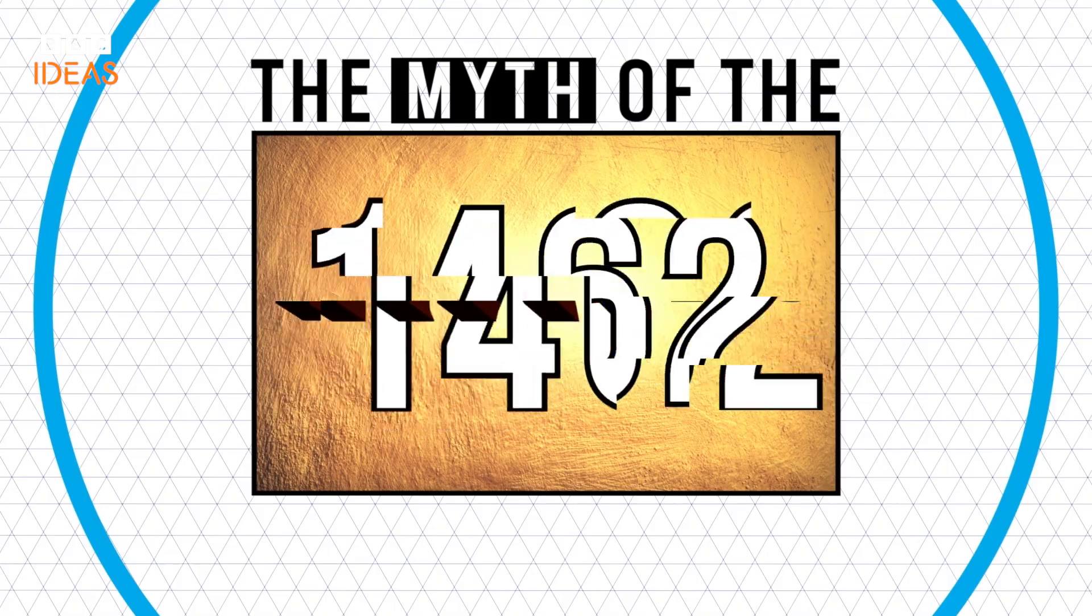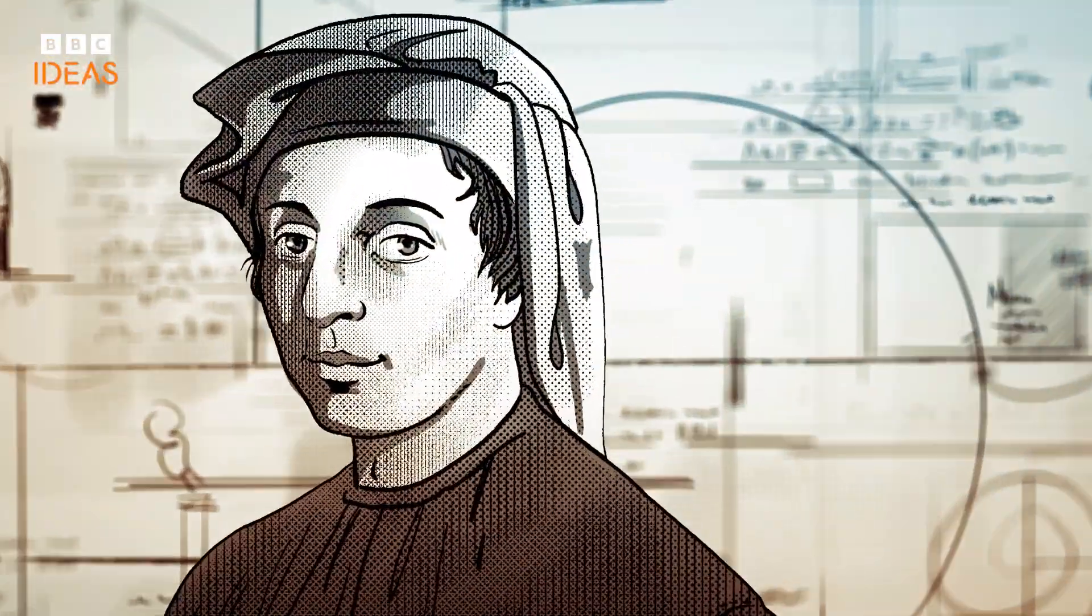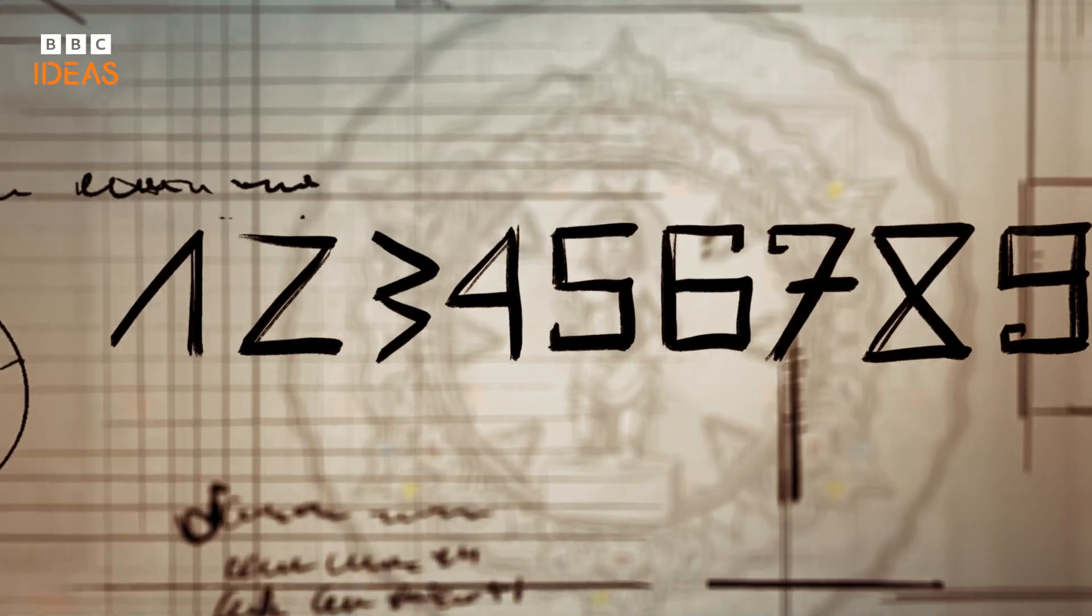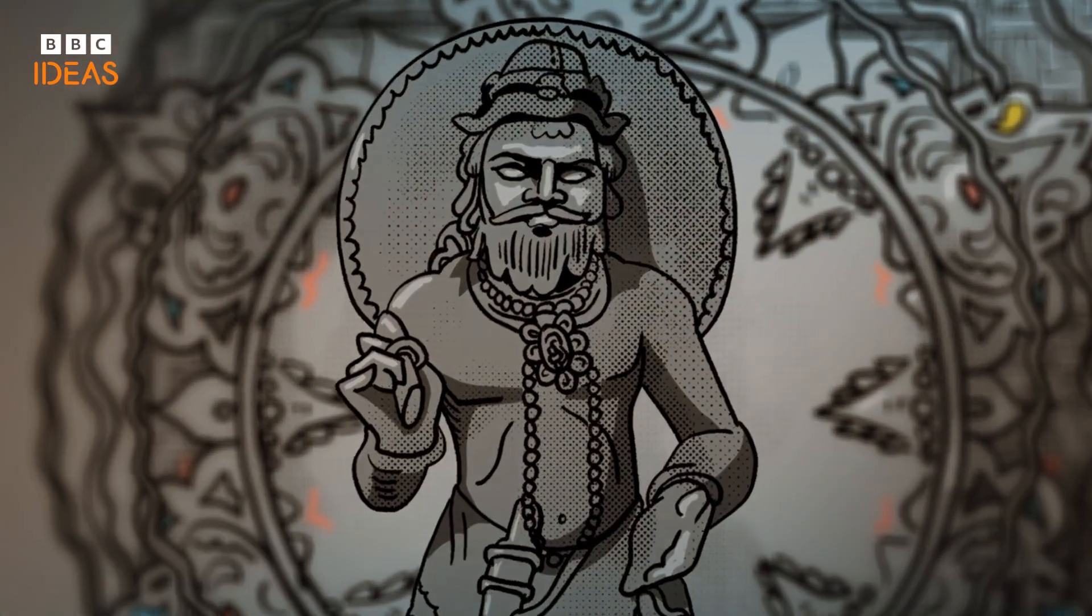Way back in 1202, Leonardo of Pisa, also known as Fibonacci, wrote a book in which he introduced Europe to the Arabic numerals we use today. But buried in chapter 12, there was a sequence of numbers discovered by the ancient Hindu poet Pingala.